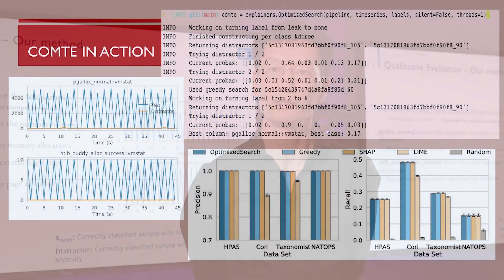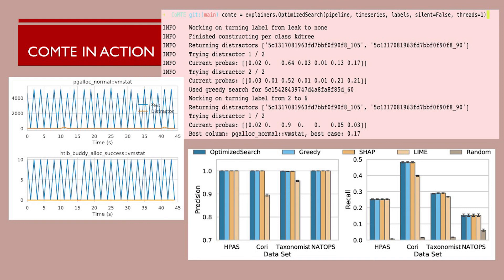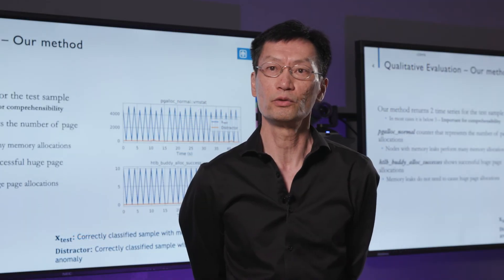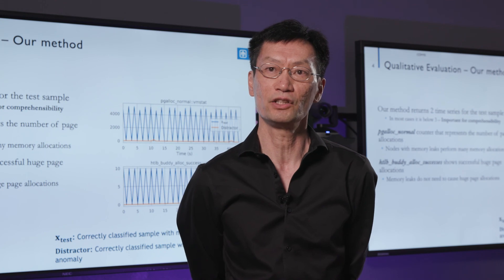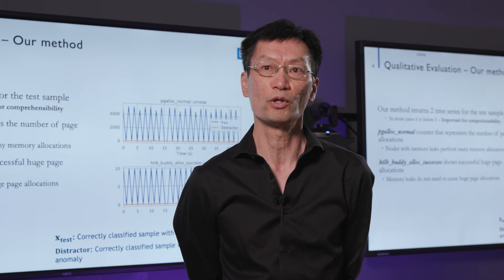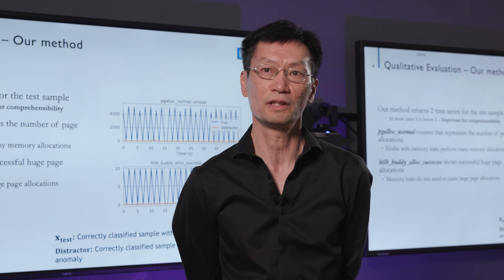I'd like to give an example from our high-performance computing anomaly detection, where a sample starts with 2,000 time series. We distill that down to 200 that actually moved. The sample was correctly classified as a memory leak, and Comte explained that with two time series: normal page allocation and huge page allocation. The normal page allocation explains the memory leak, while the huge page points to a bias in our data away from memory fragmentation, which is a normal state on the machine.